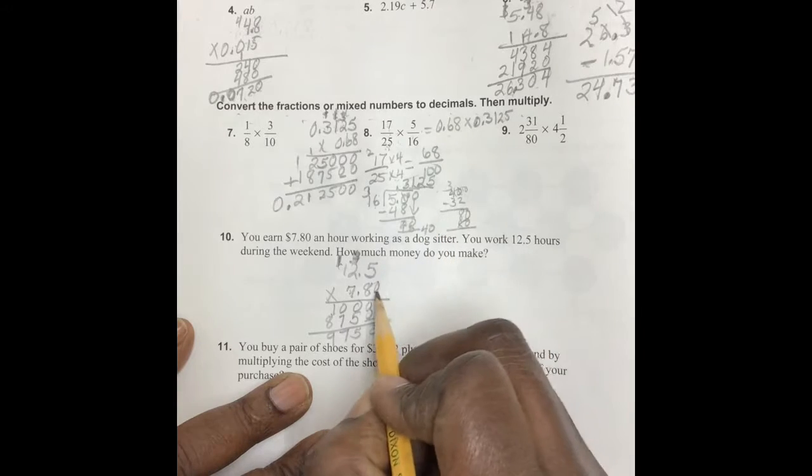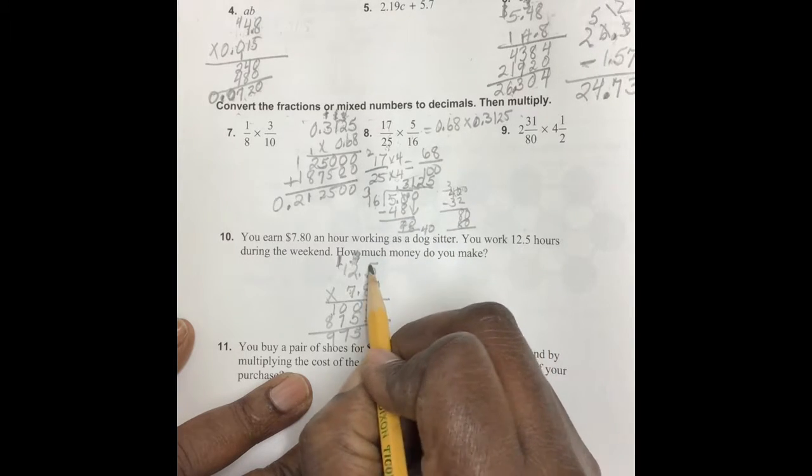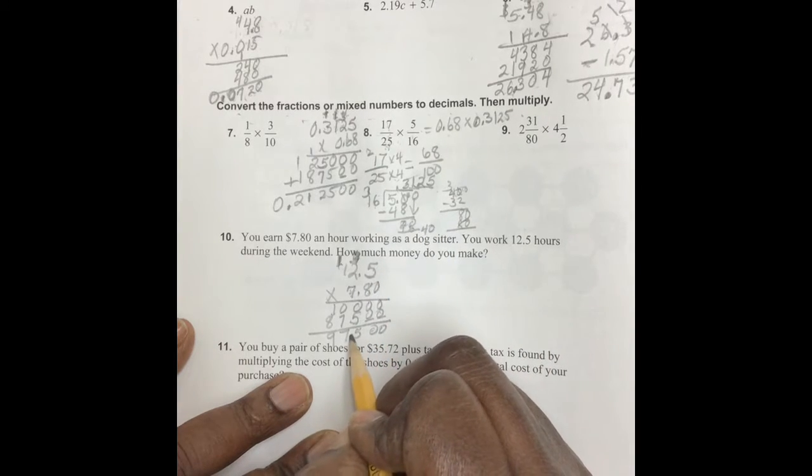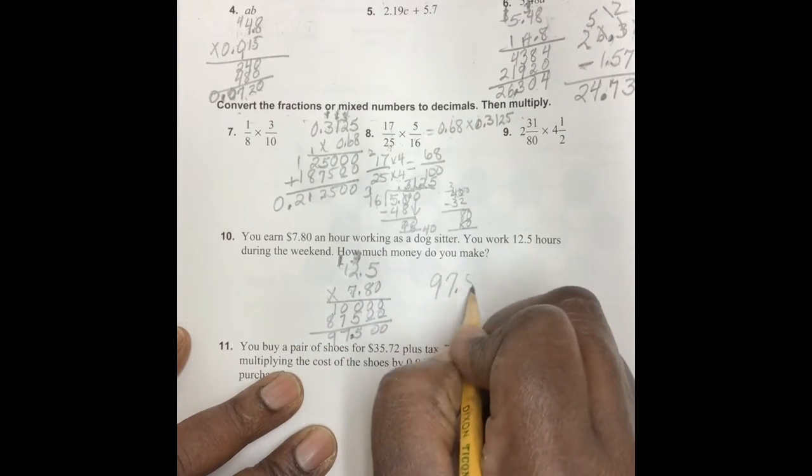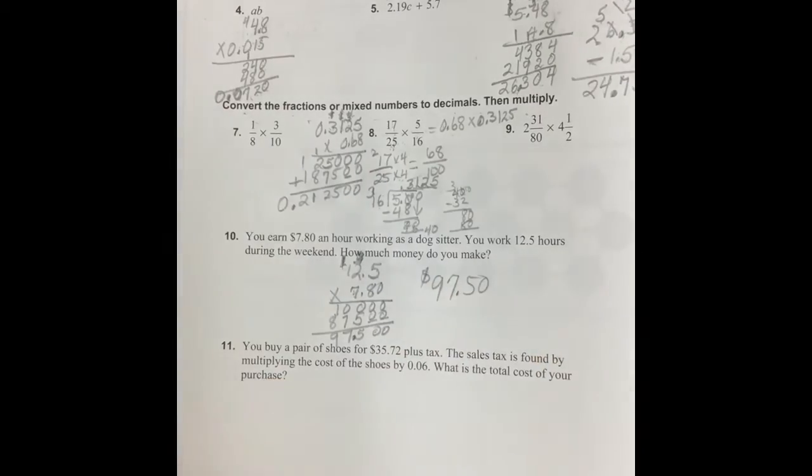How many numbers are behind the decimal point? One two three, one two three, and we discover that we have $97.50.